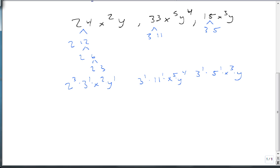So we look at what they have in common. They all have at least and only in this case one 3, so my GCF is going to include a 3. For my x's, I have x squared, x to the 5th, and x cubed. I choose the smallest of those, which is x squared. And for y's, I have y to the 1st, y to the 4th, and y to the 1st. The smallest of those is y to the 1st. And so my GCF in this case is 3x squared y.